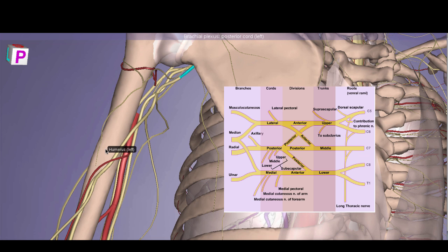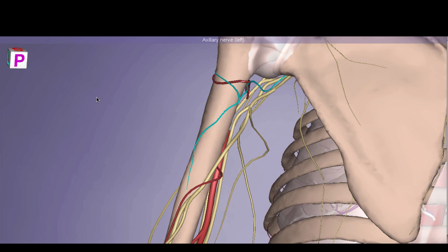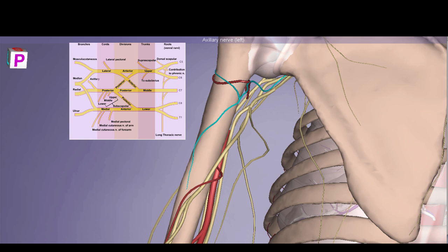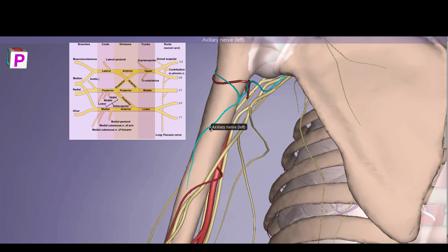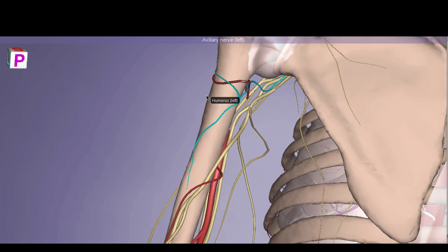Mid-shaft humeral fractures are very dangerous because they can compromise arterial supply by severing the arteria profunda brachii and cause neurological damage by injuring the radial nerve in the radial groove. The terminal branch of the posterior cord is the axillary nerve, which passes through the quadrangular space with the posterior circumflex humeral artery. The axillary nerve innervates the deltoid and gives off a small posterior branch forming the upper lateral cutaneous nerve of the arm, innervating skin directly above the deltoid.